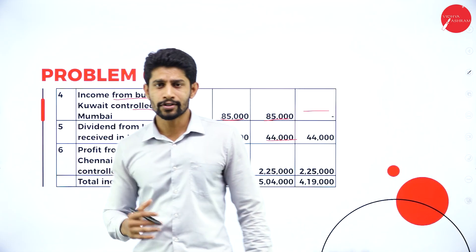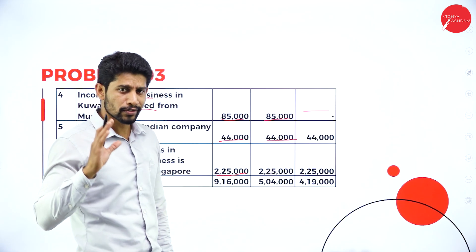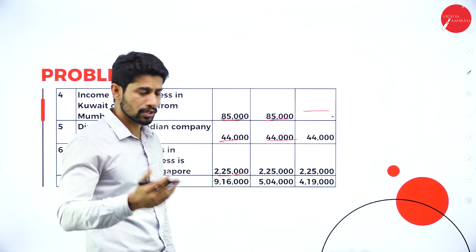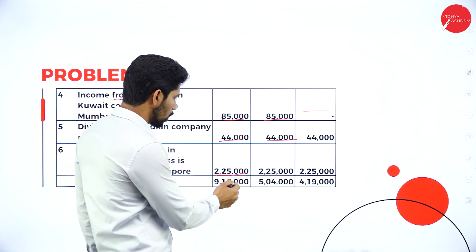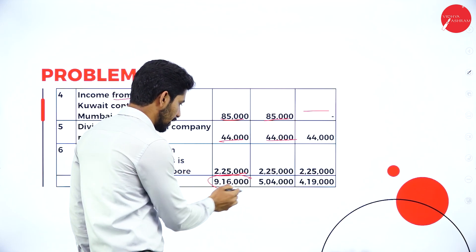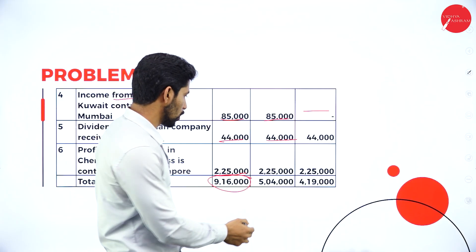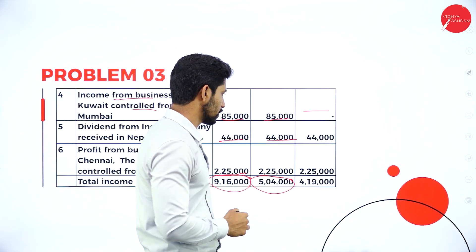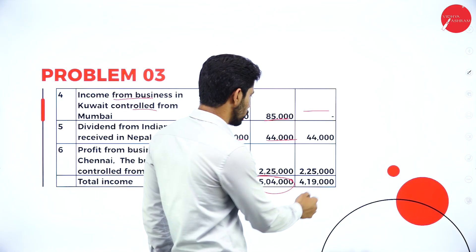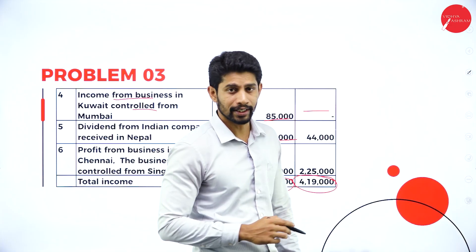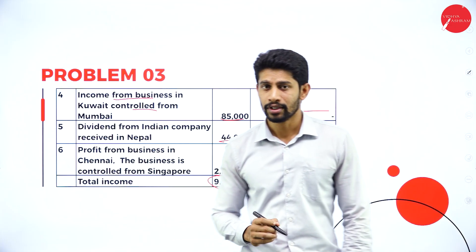Total all three columns. First column: 9,16,000. Second column: 5,04,000. Third column: 4,19,000. This is how you are supposed to solve the problem.